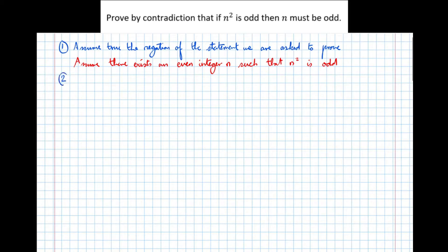Step two: use this assumption. We're going to assume that n squared is odd and work from there.